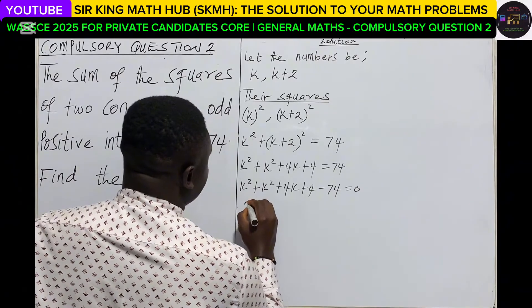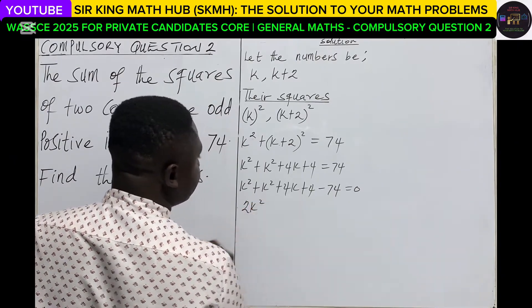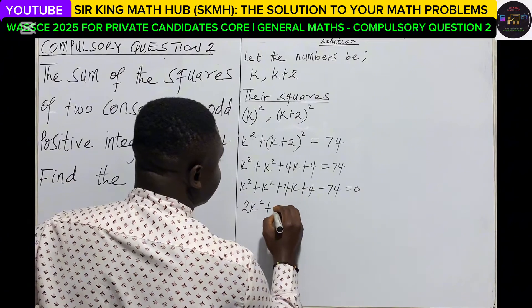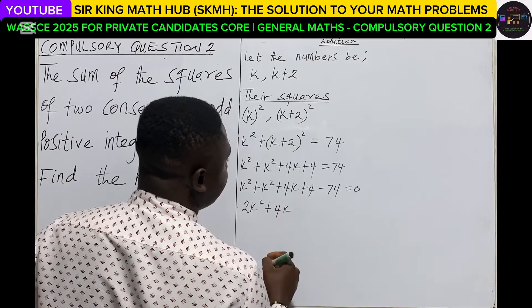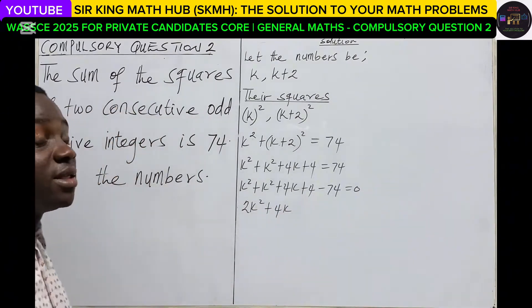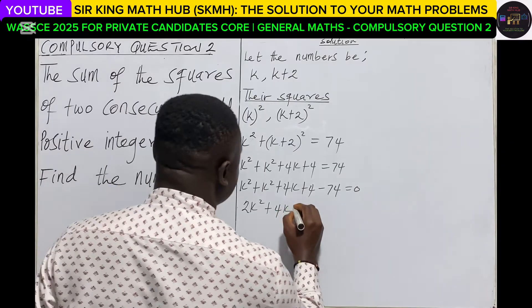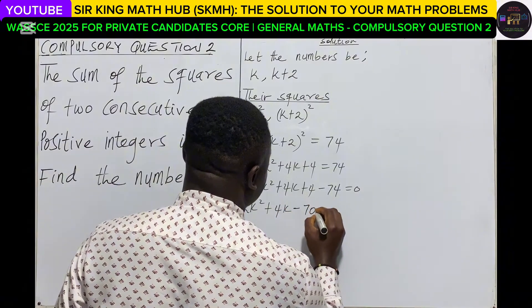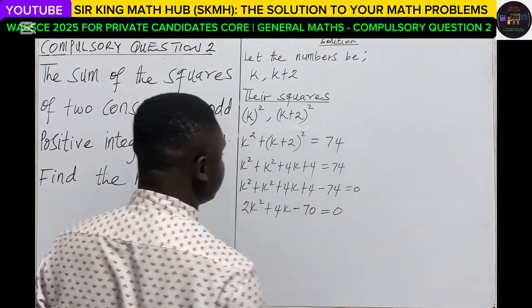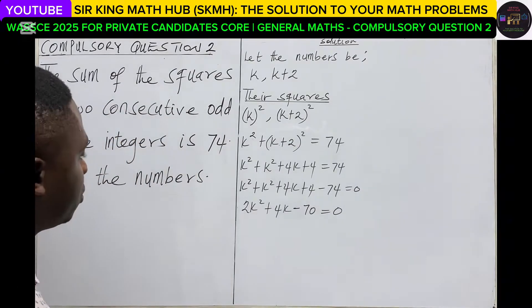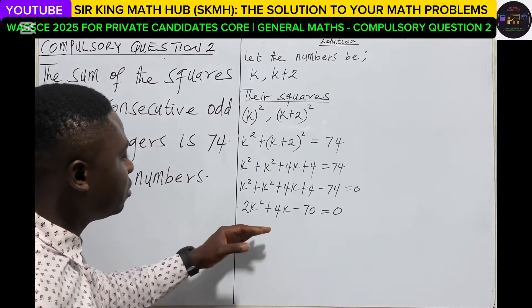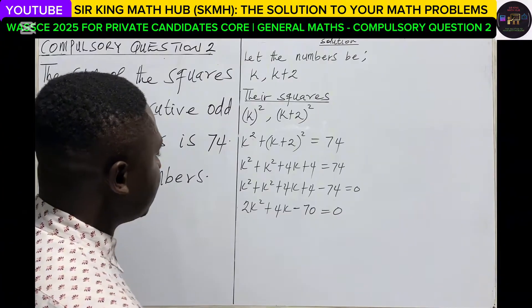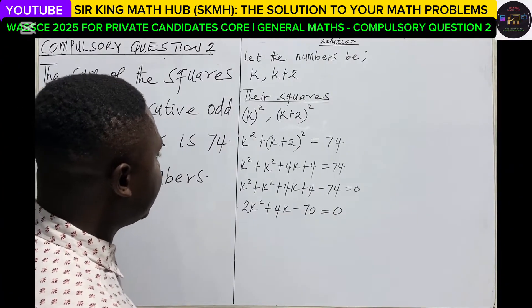K squared plus k squared, we have 2k squared plus 4k, and then 4 minus 74 that is minus 70, and this must be equal to 0. So I think we can still reduce the terms by dividing each term by 2.